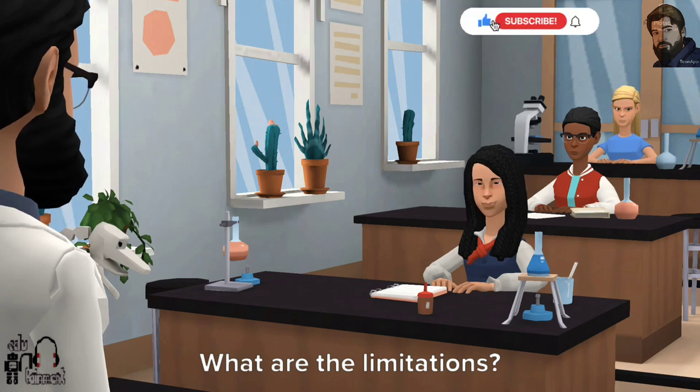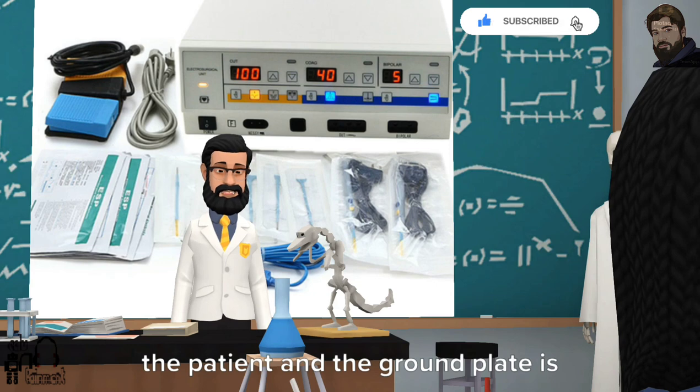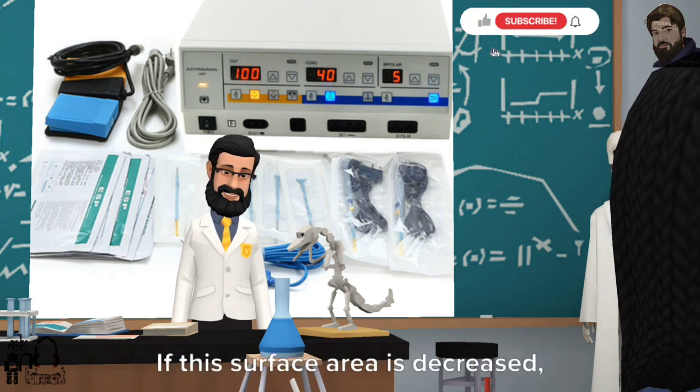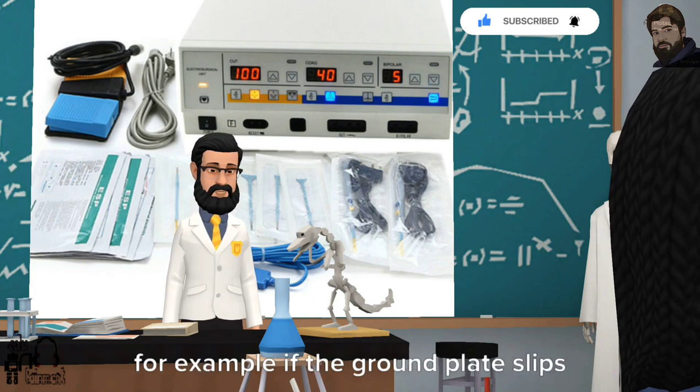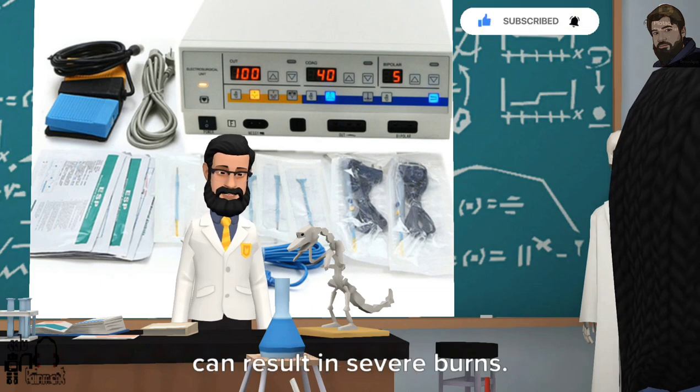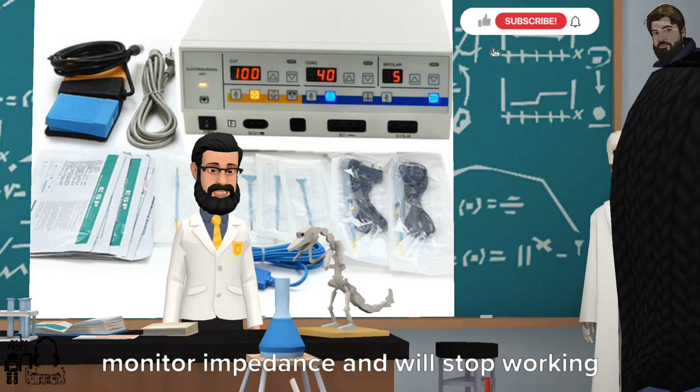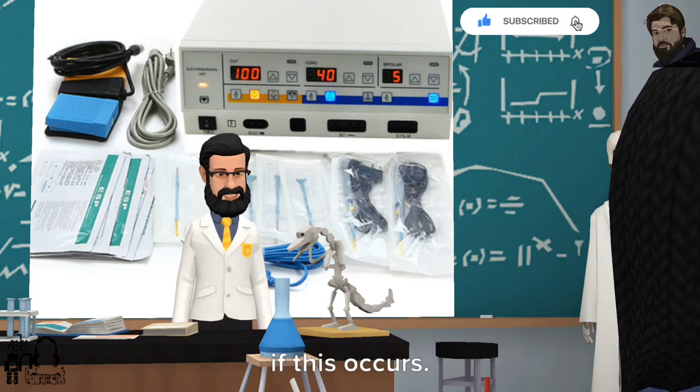What are the limitations? In monopolar mode, good contact between the patient and the ground plate is essential. If this surface area is decreased, for example if the ground plate slips partially off the patient, then this can result in severe burns. Fortunately, many modern machines monitor impedance and will stop working if this occurs.